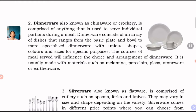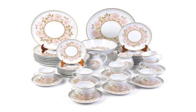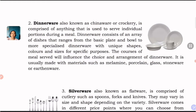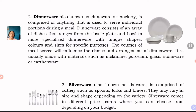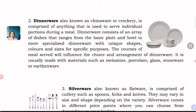This is what we commonly use at home — the basic plate and bowl — to more specialized dinnerware with different shapes, colors, or sizes for specific purposes. The courses of meals served will influence the choice and arrangement of dinnerware. It is usually made of materials such as melamine, porcelain, glass, stoneware, or earthenware. At home, we use plastic plates because they're lighter, easier to wash, and won't break easily, but it's also good to invest in nicer dinnerware for special occasions.